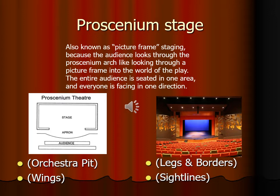The curtains that run from downstage to upstage are called legs; they control sight lines and hide backstage areas where actors wait and set pieces are stored. Borders are small curtains running across the top of the stage so the audience cannot see up into the fly rail system. The fly rail system is a system of pulleys and poles called battens on which you attach lighting, drops, and painted pieces of scenery that you can raise and lower.